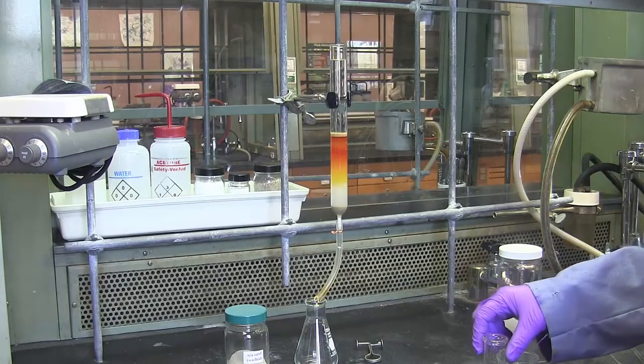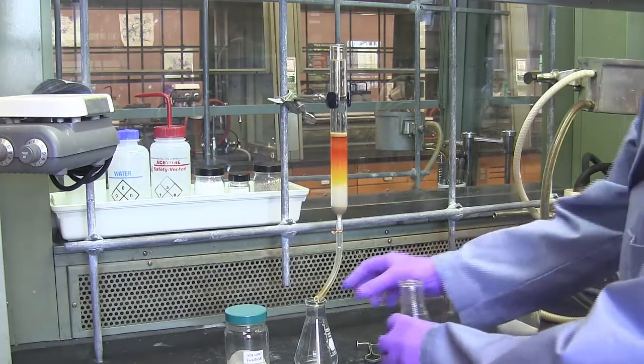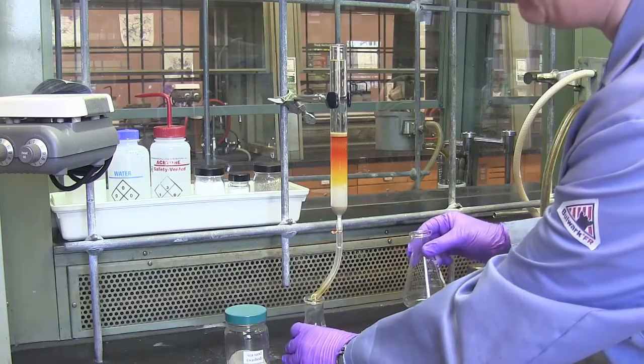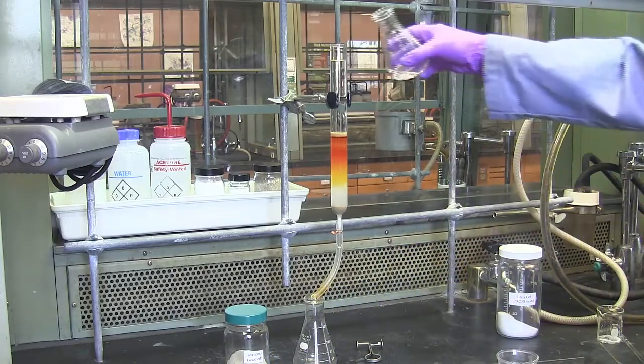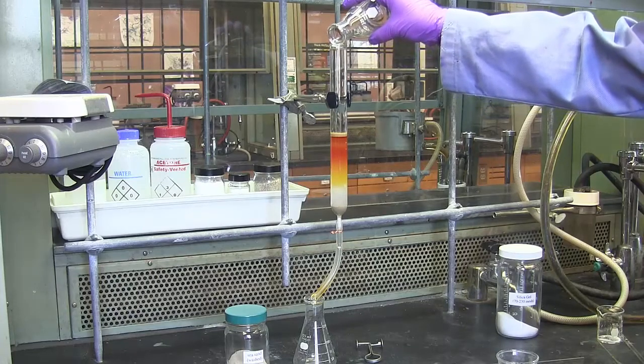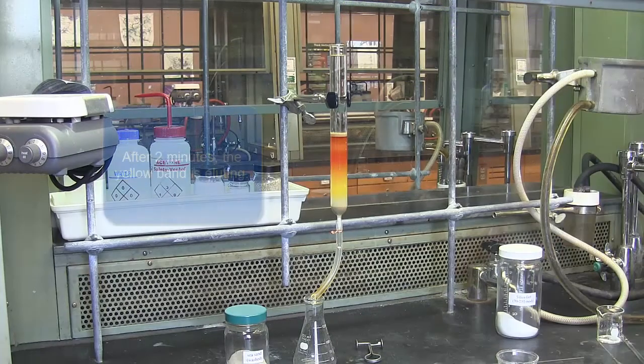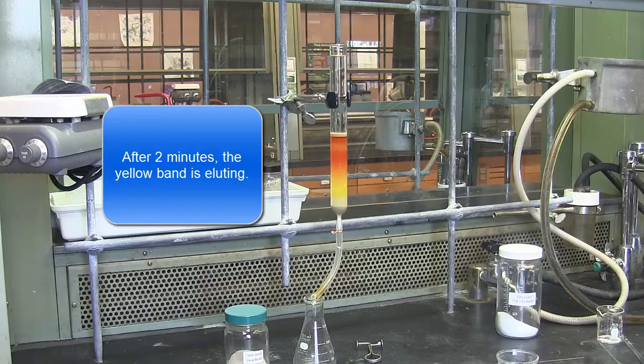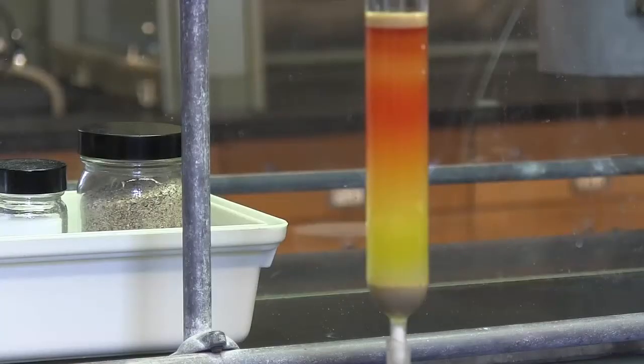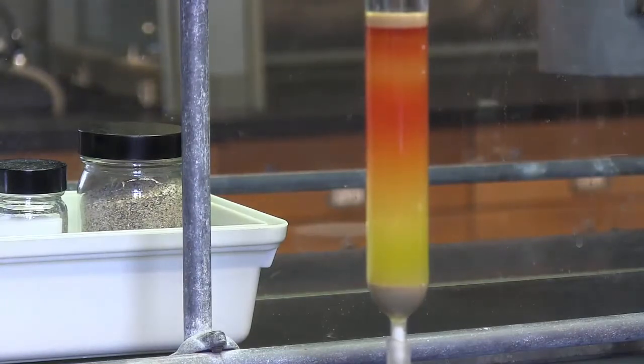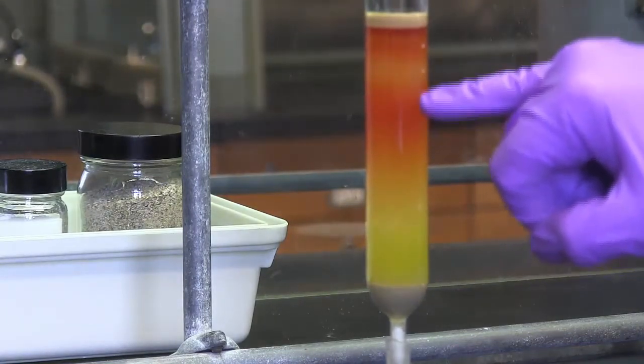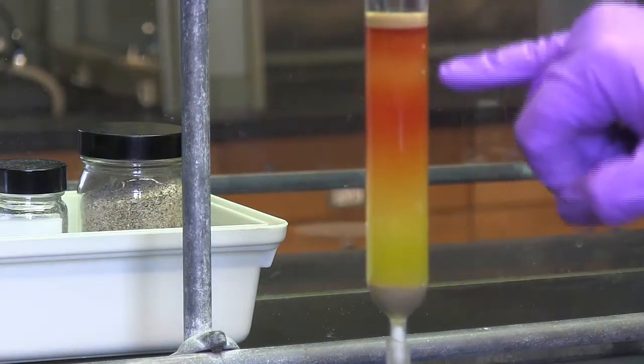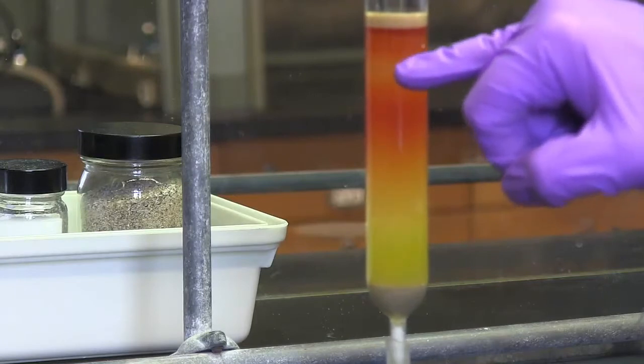Once the first band approaches the bottom of the column, the sand, you can switch to a collection flask for the first band. Again, this solvent is clean right now. I can recycle it if I want. The first band has reached the sand and is eluting into the collection flask. I can also see some separation between a component here and whatever is more polar and still stuck to the column. I'm seeing a little bit of white silica developing here in the middle. So here's a yellow band that's coming off.